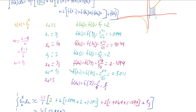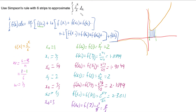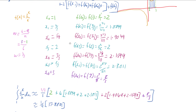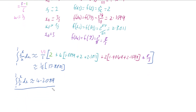Simpson's method is particularly useful here because 2 to the x on x is a rather complex function to integrate, so approximating it is not a bad way to go. We follow the rule: first value, plus 4 lots of all the odd values, plus 2 lots of all the even values, plus the last value, all multiplied by the width divided by 3. Work out all those values, put them together, and we get our answer.